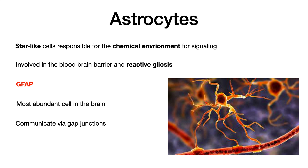Astrocytes are actually the most abundant cell in the brain and they communicate via gap junctions. All of these points basically tell you that astrocytes play a supportive role, maintaining the extracellular environment to support other neurons in the CNS. The prefix 'astro' means star-like — like astrophysics — so it shouldn't be a surprise that these are star-like cells. A helpful mnemonic: astrocytes are the stars of the extracellular environment.